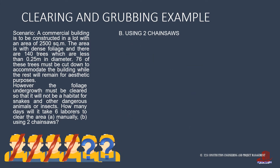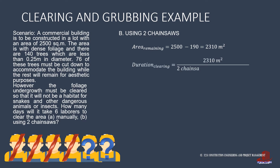From this computation, we can conclude that the remaining area to be cleared is 2,500 less 190 square meters cleared earlier, and that is 2,310 square meters left. The duration of clearing such area using two chainsaws will be 2,310 square meters divided by the two chainsaws of 200 square meters output per day for each chainsaw, so the duration of clearing the remaining area is 5.775 days.